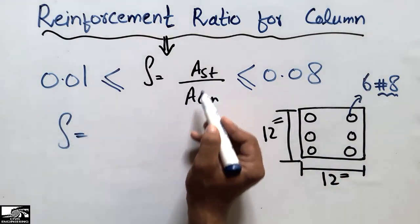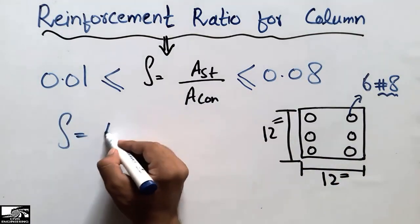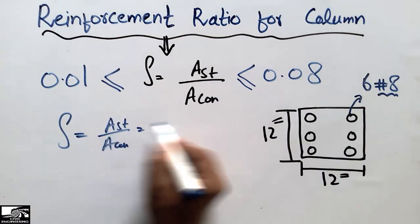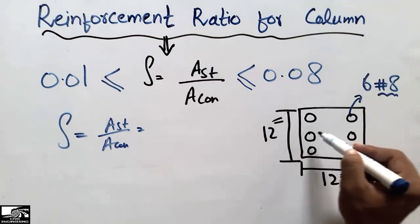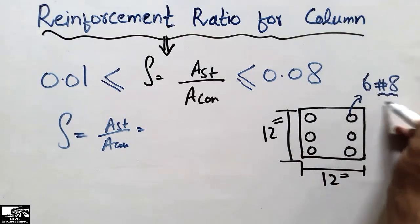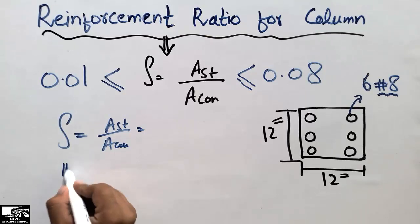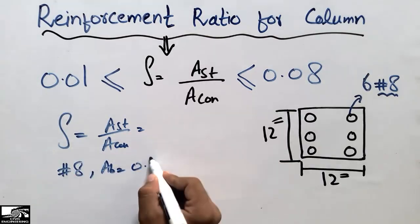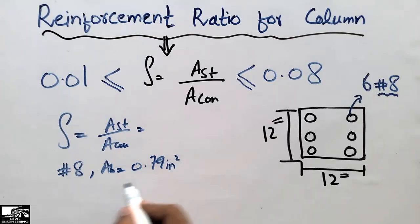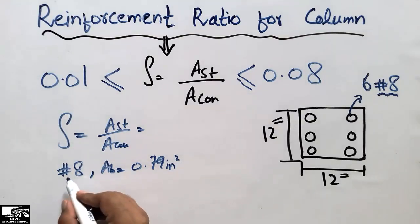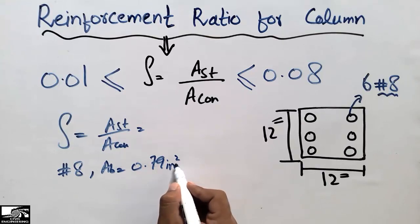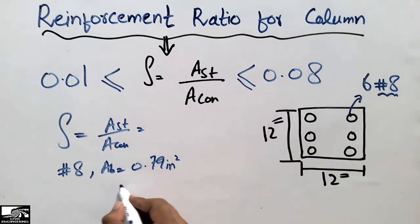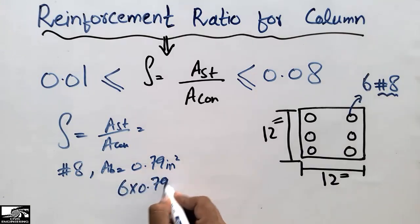The reinforcement ratio of this column is the area of the steel divided by the area of the concrete. The area of the steel: we have six number eight bars, and we know that the area of a number eight bar is 0.79 square inches. Since there are six bars, we multiply six by 0.79.